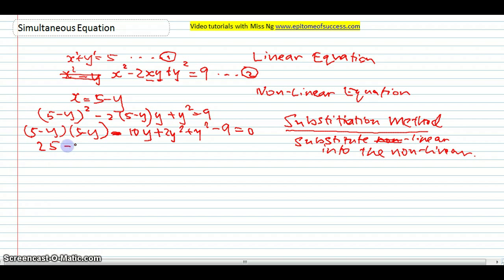Now expand this. This becomes 25 minus 10y plus y square minus 10y plus 2y square plus y square. That is 3y square minus 9. That's equal to 0. So now, be very careful. Do your y square and your y square. That's 4y square. Negative 10y, negative 10y. That's negative 20y. 25 minus 9. That is plus 16 equals to 0.